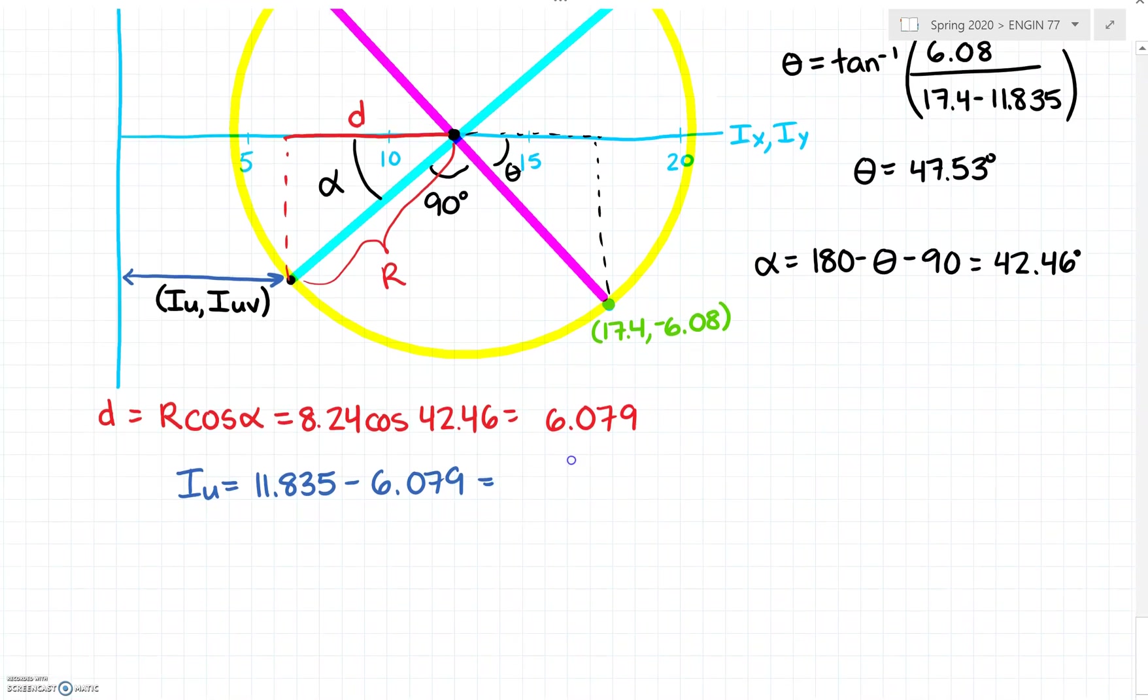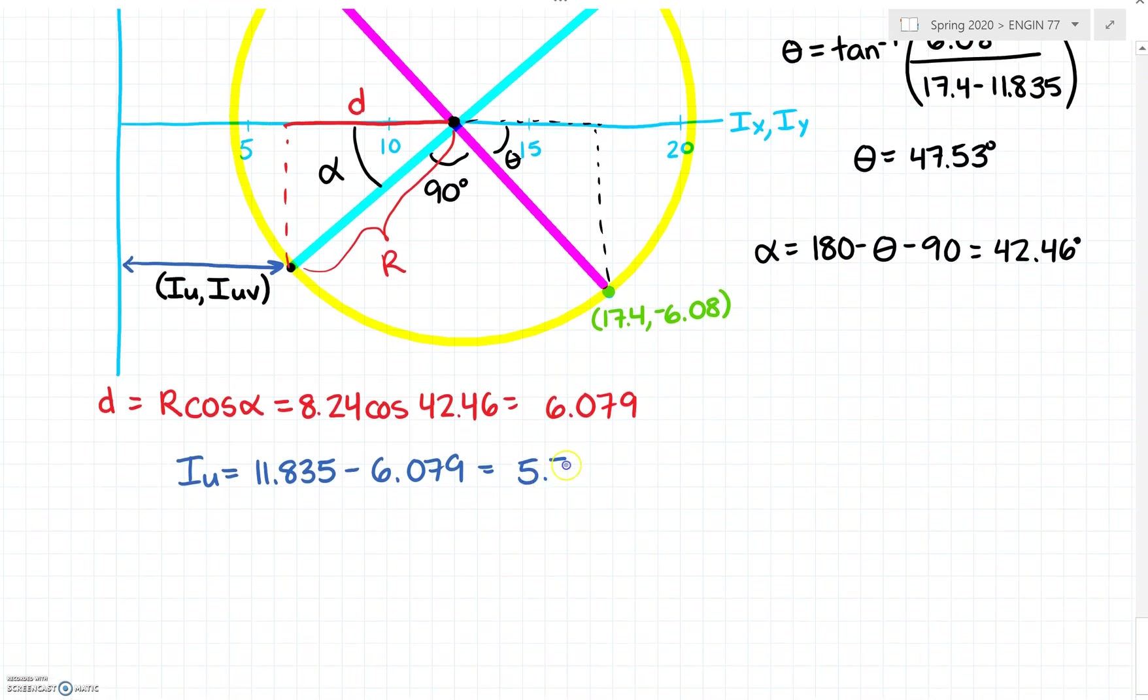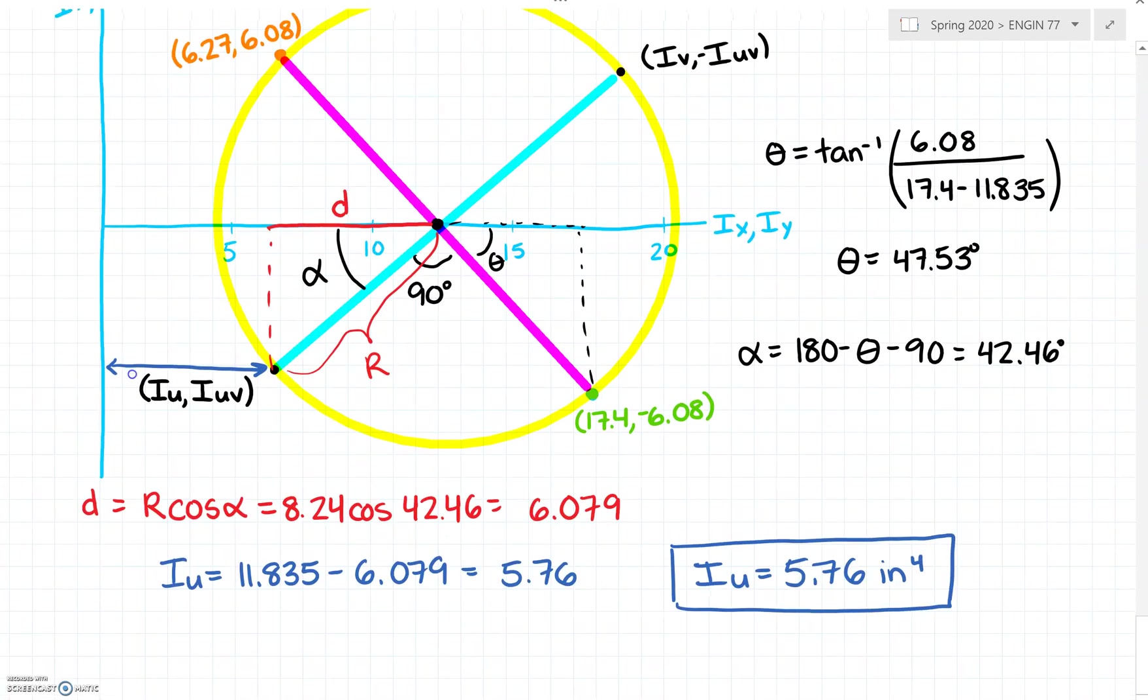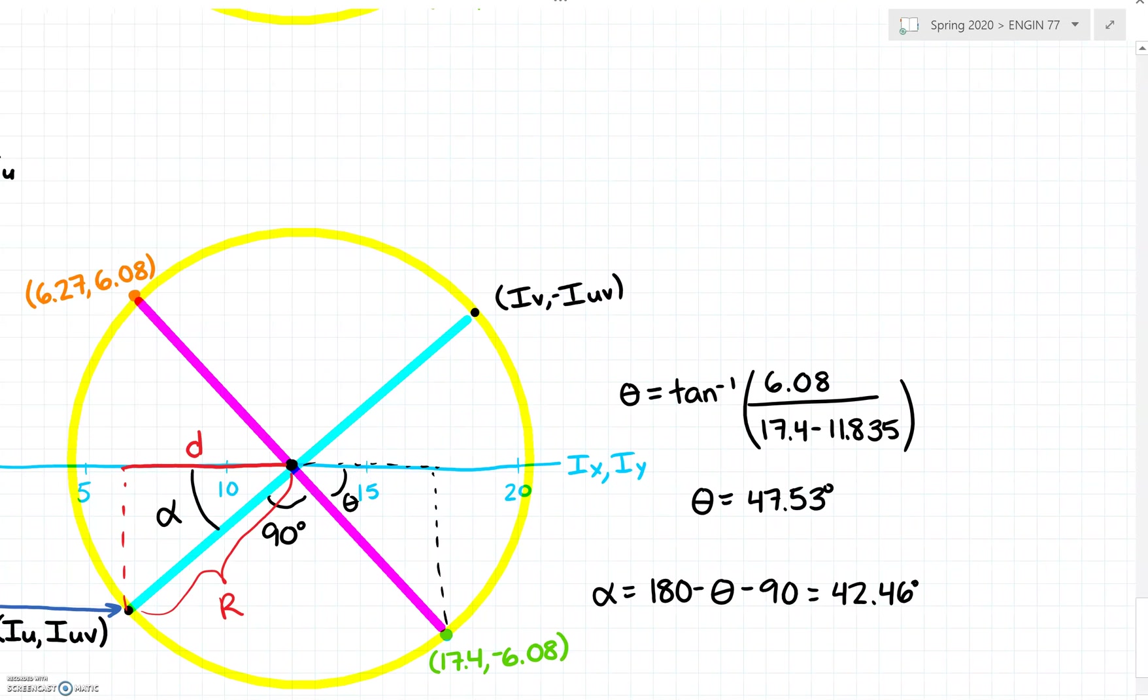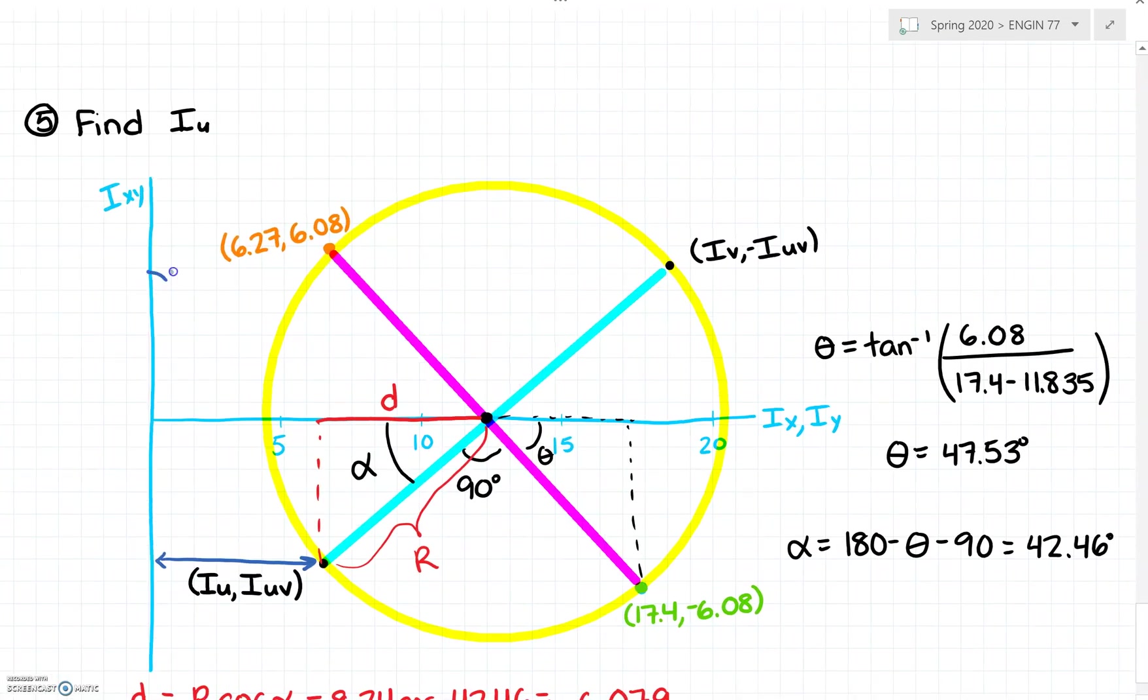That's going to be 5.76. So that is the moment of inertia about our u axis using Mohr's circle, and our units are inches to the fourth. We could use the same method to find this distance which is going to be our Iv or our moment of inertia with respect to the v axis.